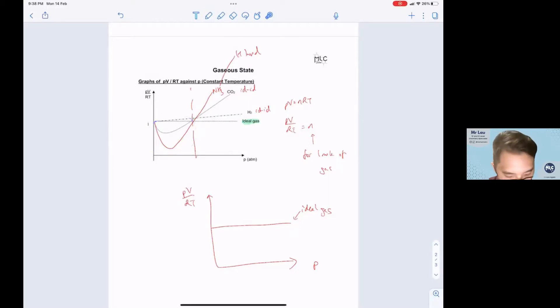So all you need to remember is the greater the deviation, the greater the IMF, hence the greater deviation from ideal behavior. So this is one minute of chemistry. See you the next time.